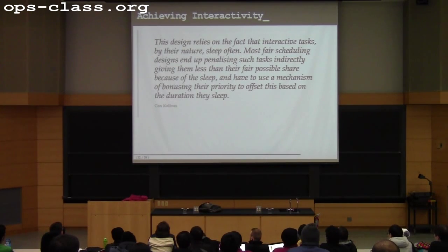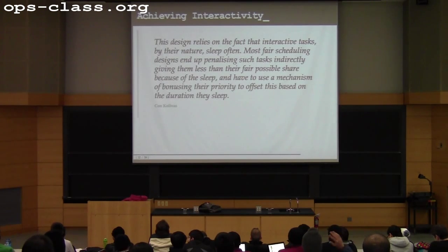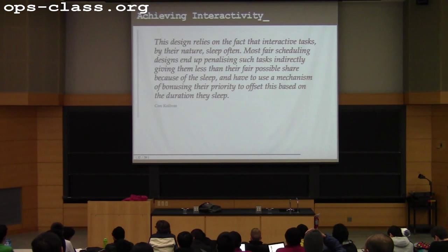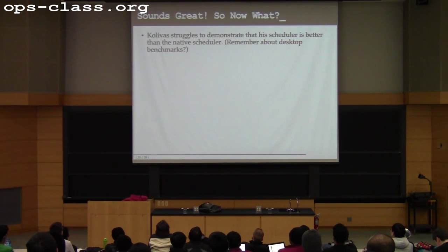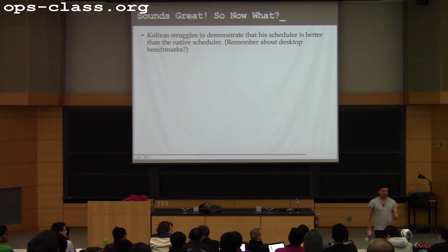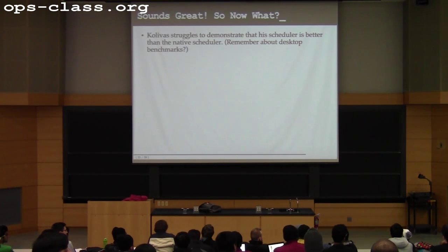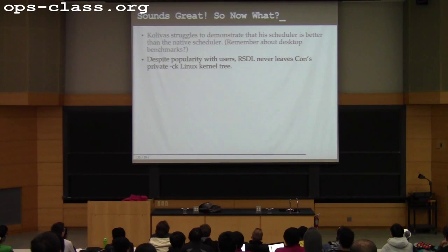This design does not suffer from the problem of inadvertently penalizing interactive threads. A lot of schedulers end up trying to bonus them back through weird interactivity detection — this design avoids that. Now for the sad part of the story: the desktop community didn't have good benchmarks or well-defined goals. Con came up with a nice idea, but it was very difficult to show a convincing proof that it was good. People liked it and reported good performance, but it never left his private Linux kernel tree.